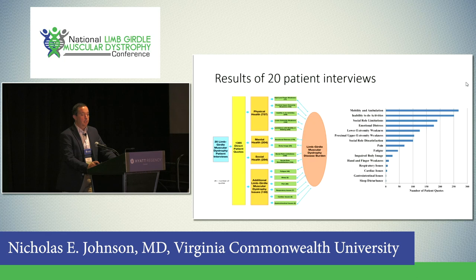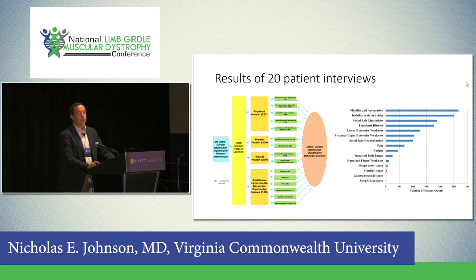The next step is to replicate those patient interviews in a large survey to determine how common each symptom is and how impactful it is on someone's life, then validate that instrument in a prospective study. From 20 patient interviews with individuals with different forms of limb girdle muscular dystrophy — interviews lasting about an hour, transcribed and coded — the results make sense: problems with mobility and ambulation, and inability to perform activities, were the two most frequently mentioned issues.